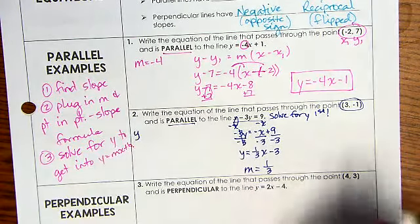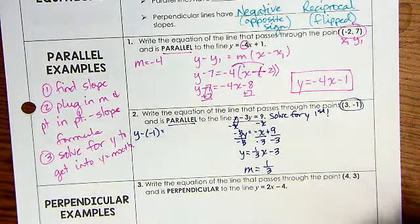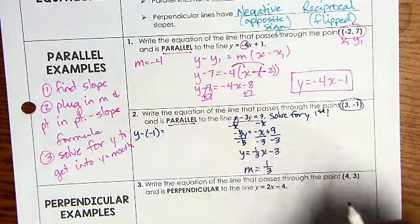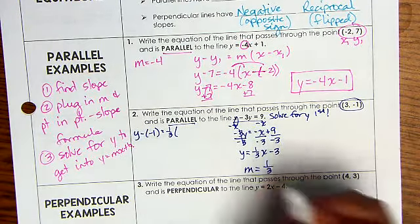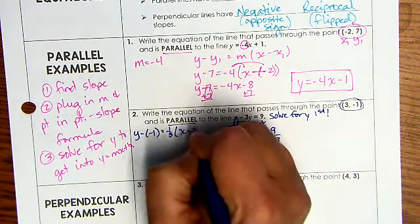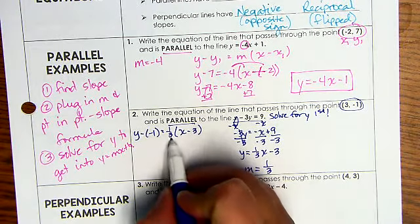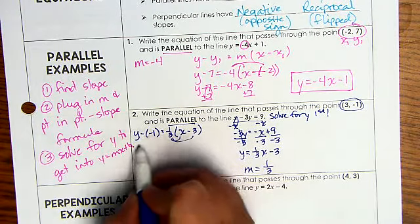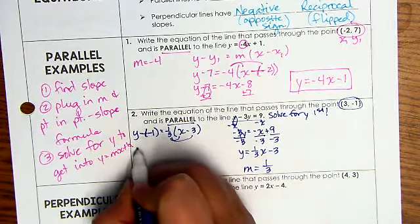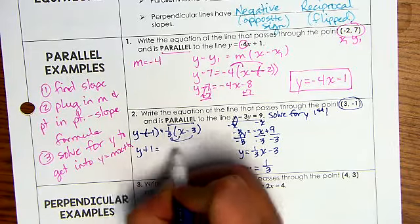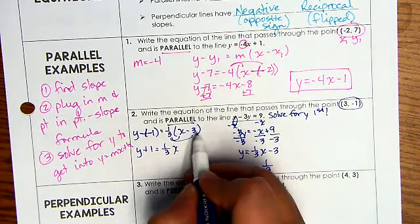So we have y minus negative 1 equals 1 third x minus 3, close parentheses, and now I distribute. So I have, oh, and we have a double negative there, so it becomes a plus.